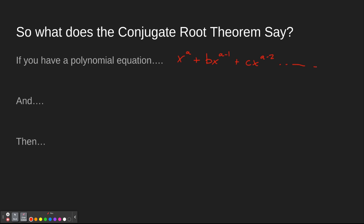If you have that, and one of the solutions is a plus radical b, then another solution is a minus radical b. It also says, if you have a polynomial equation, and one of the solutions is a plus bi, then another solution is a minus bi.